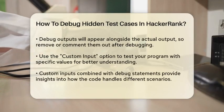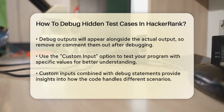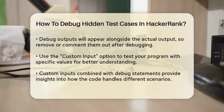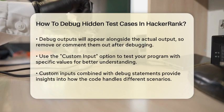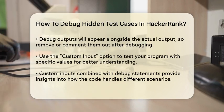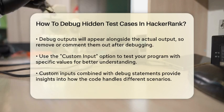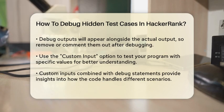When you run your code, these debug print statements will display their output along with the actual output of your program. However, remember that these debug outputs will be mixed with the actual output in the Your Output area. So make sure to remove or comment them out once you're done debugging to avoid any confusion.